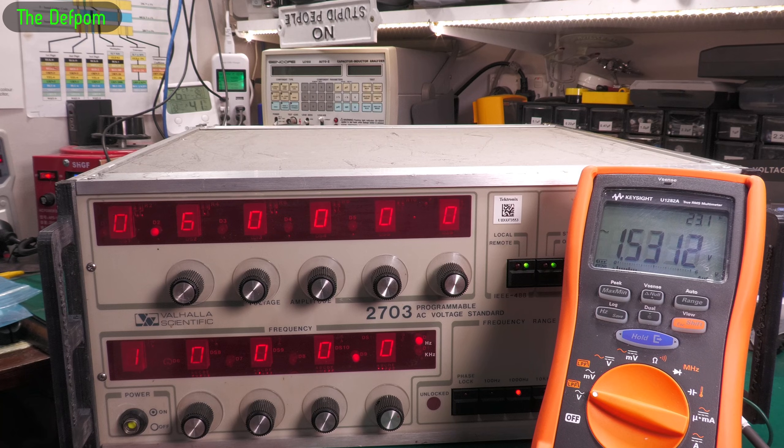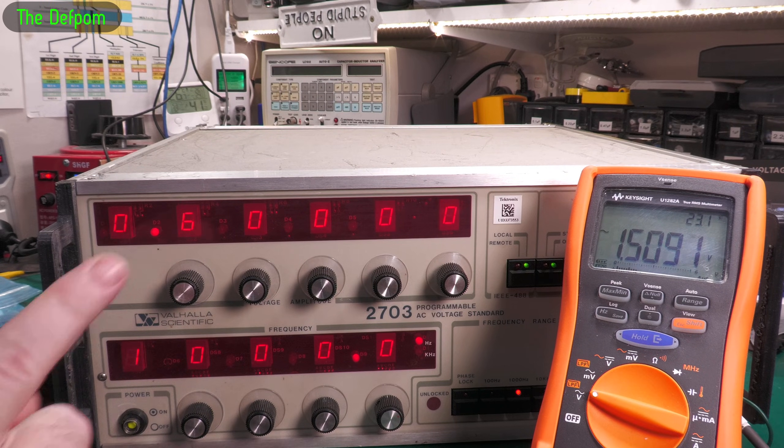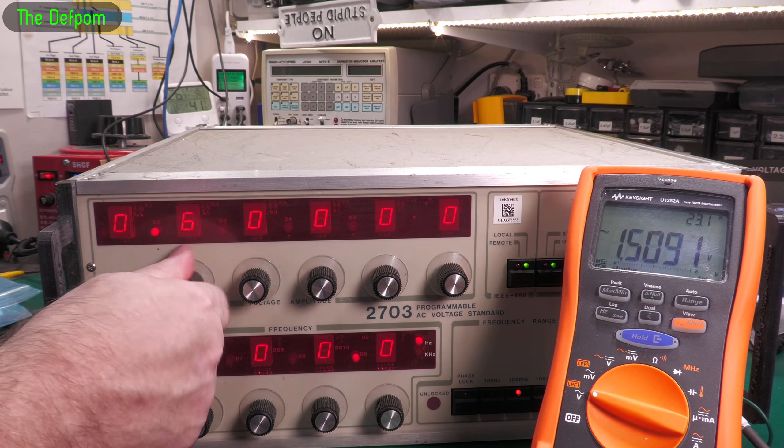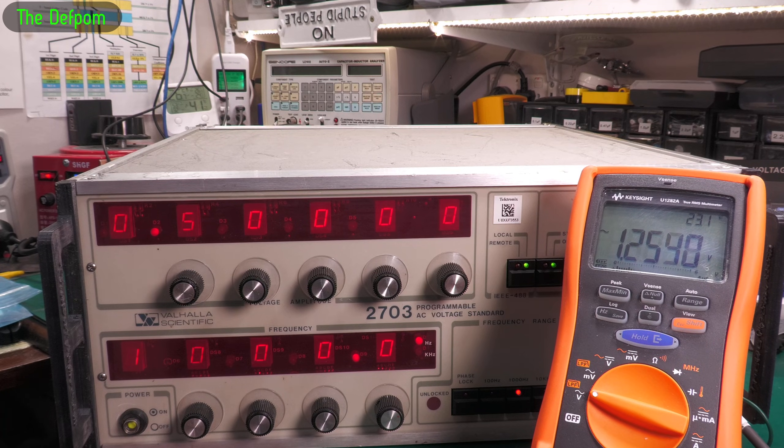And then we get low enough, it jumps up to 1.5 volts. This is a clue, this is a definite clue. Then I'll come down, I'll get back to one volt again.